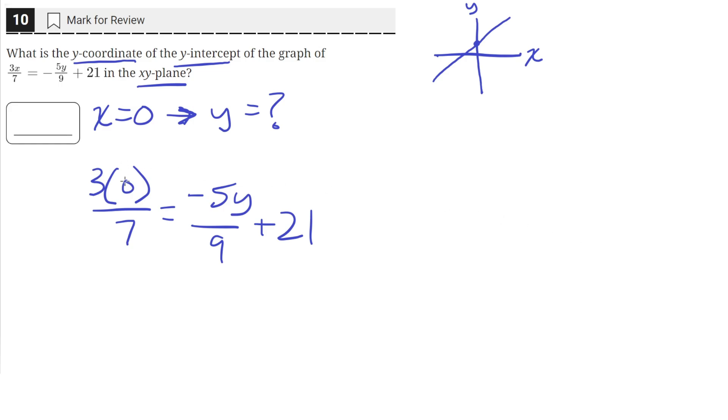So 3 times 0 is just 0. 0 divided by 7, that's just 0. So on the left-hand side we'll have 0, and on the right we'll have negative 5y over 9 plus 21.